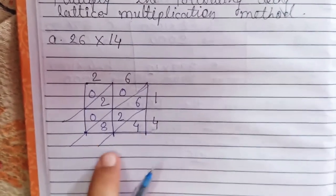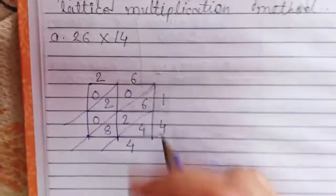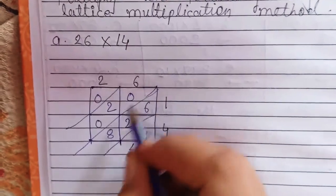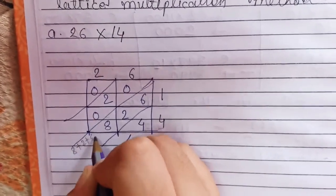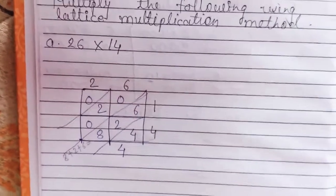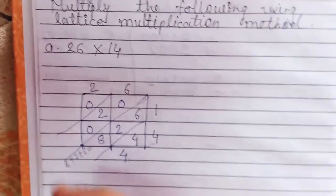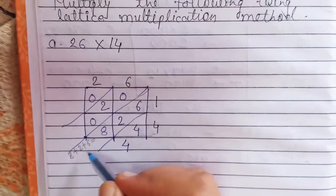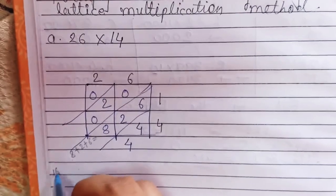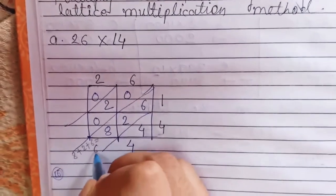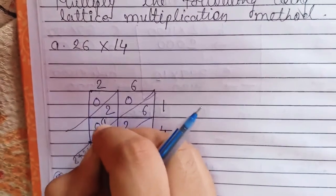Now, 4 as it is. Then there are 3 digits: 8, 2 and 6. So 8 plus 2 plus 6: 8 plus 2 is 10, 10 plus 6 is 16. There is a 1 and 6, so 6 will be written here and 1 as a carry over.